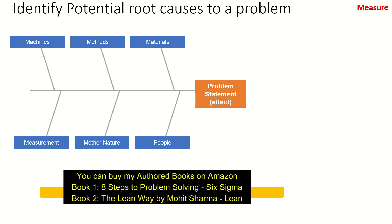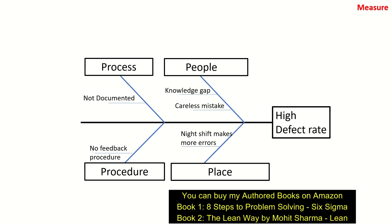This looks like more for a manufacturing kind of environment. For a services environment it becomes people, process, procedure, and place. Let us take the example of high defect rate. Under people, it could be because of the knowledge gap or careless mistakes people are making. Under process, the process is not documented. Under procedure, there is no feedback procedure for the team. And under place, the night shift makes more errors — place is more to do with the environment. This is how a fishbone diagram can help identify potential root causes to a particular problem in the Measure phase.